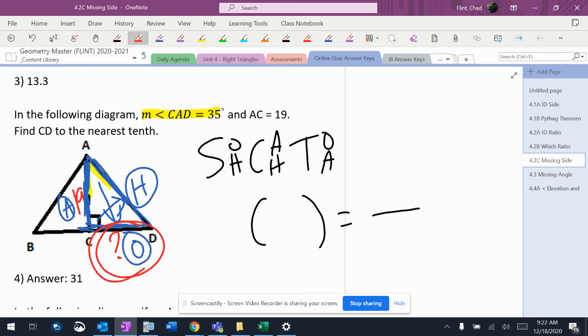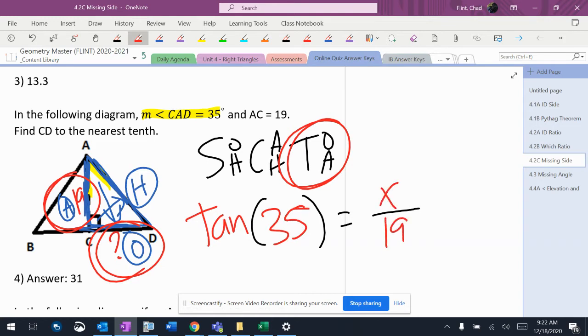So I am going to be using the opposite and the adjacent, which means I'm using tangent. The angle is 35, the adjacent is 19, and I don't know the opposite. So the setup's going to look like that.